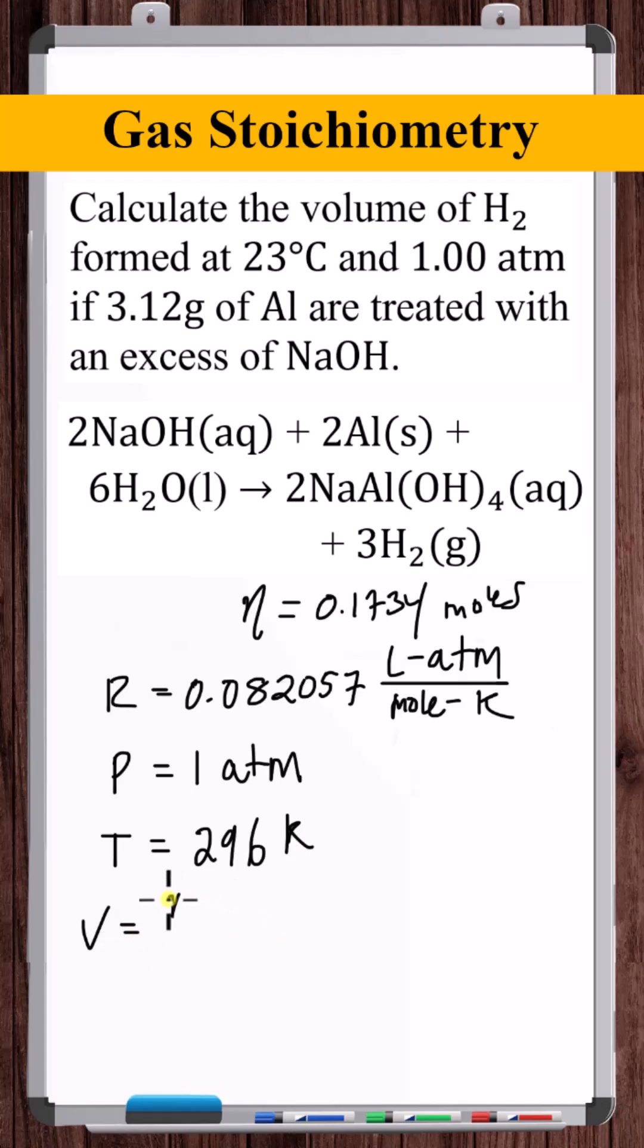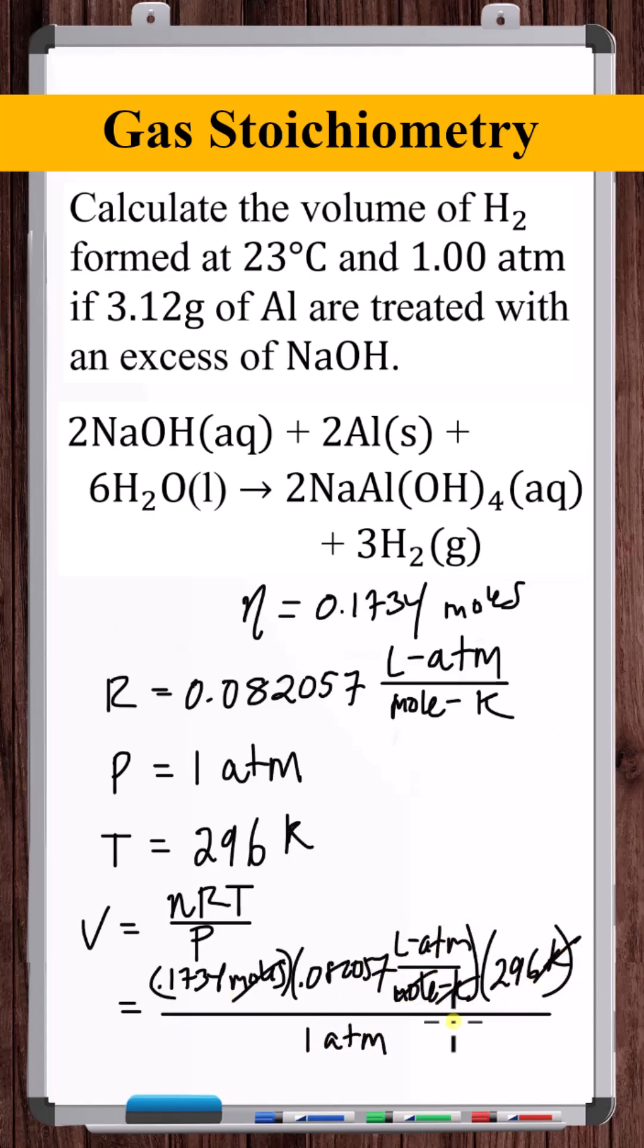So V is equal to nRT over P, and we're left with the volume in liters.